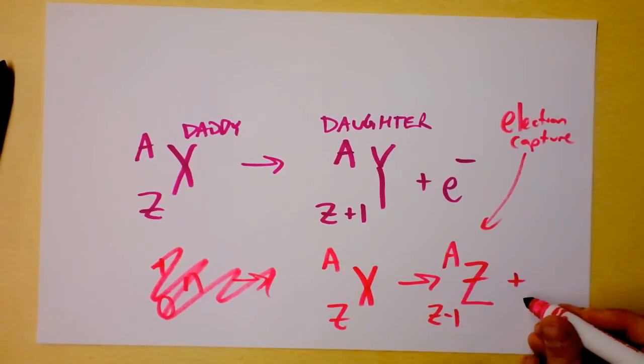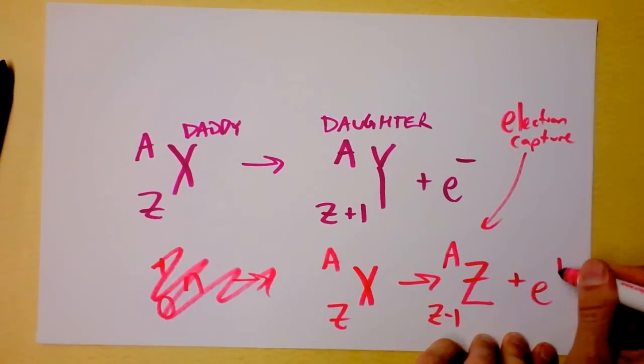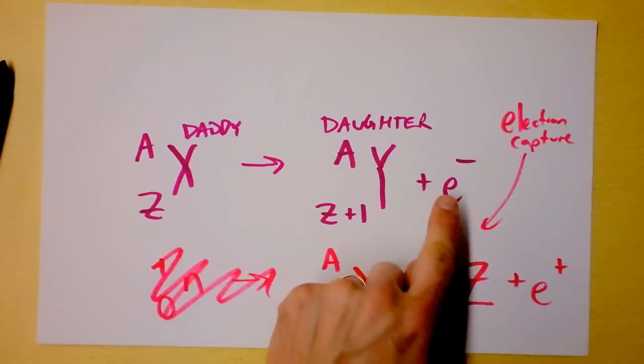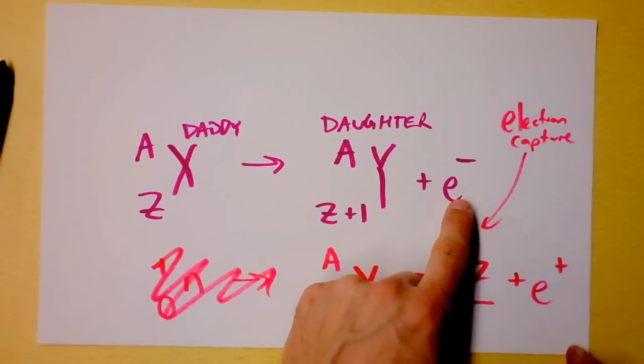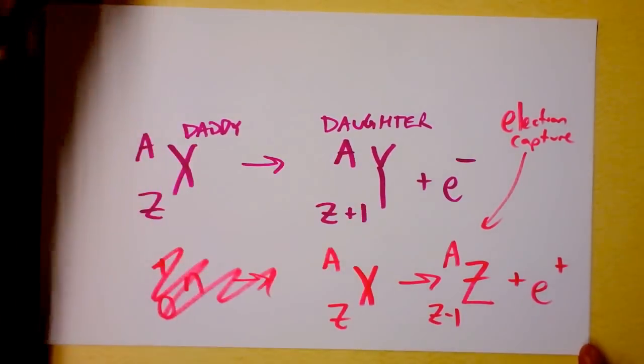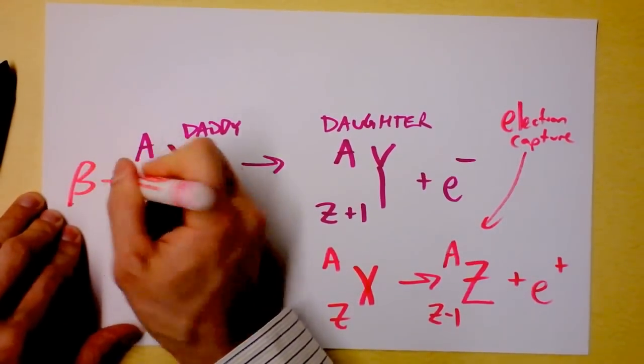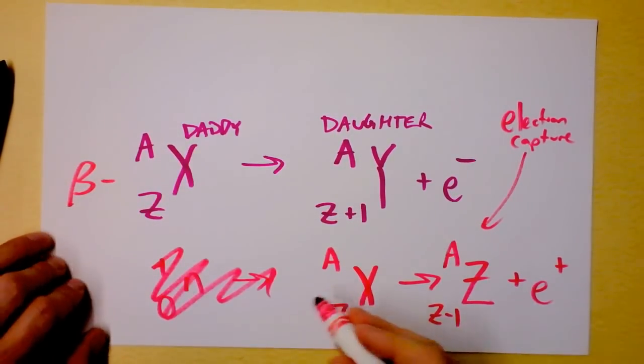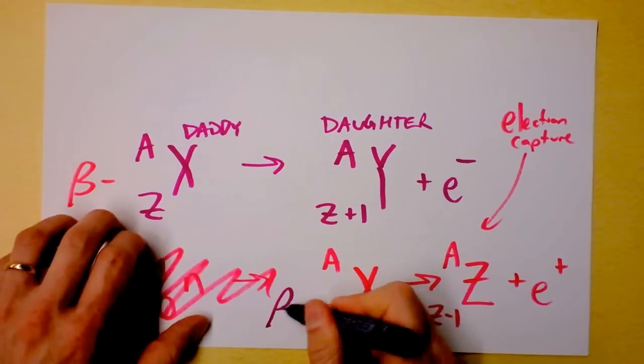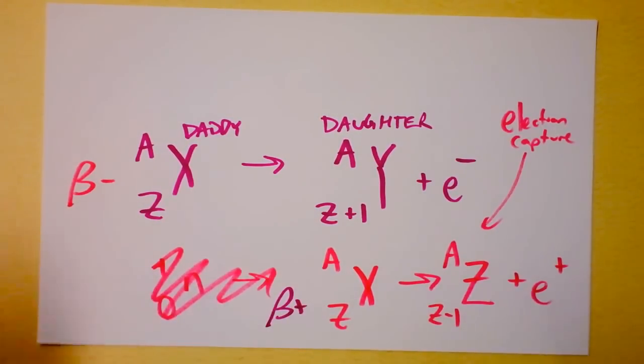So I'm going to get this daughter plus a positron. That's the symbol for a positron. That's the symbol for an electron. This is the opposite of that. Now, this system right here, this guy right here is called beta minus decay. And when it's doing stuff like this, we've got what's called beta plus decay.